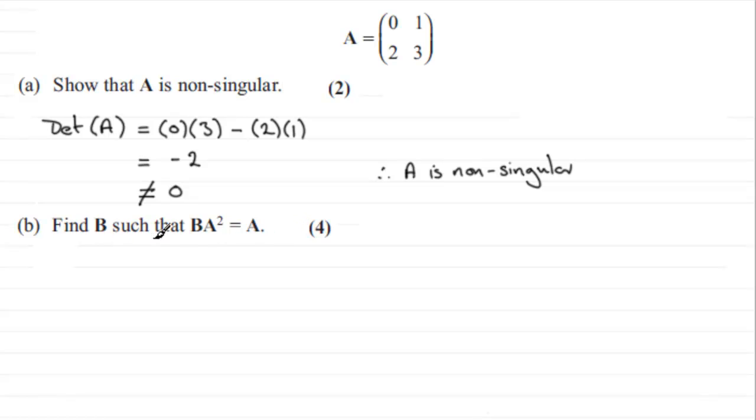Because what we need to do here is rearrange this equation to make B the subject. So if we just put the equation down first of all, we've got B times A squared equals the matrix A. Now I'm going to put this in lots of steps. You might be able to jump stages, but I'm purposely putting all the stages in here so that hopefully I make the methods as clear as I can. So for B times A squared, what we've got here is B times A times A. That equals A. So I've just expanded the A squared.